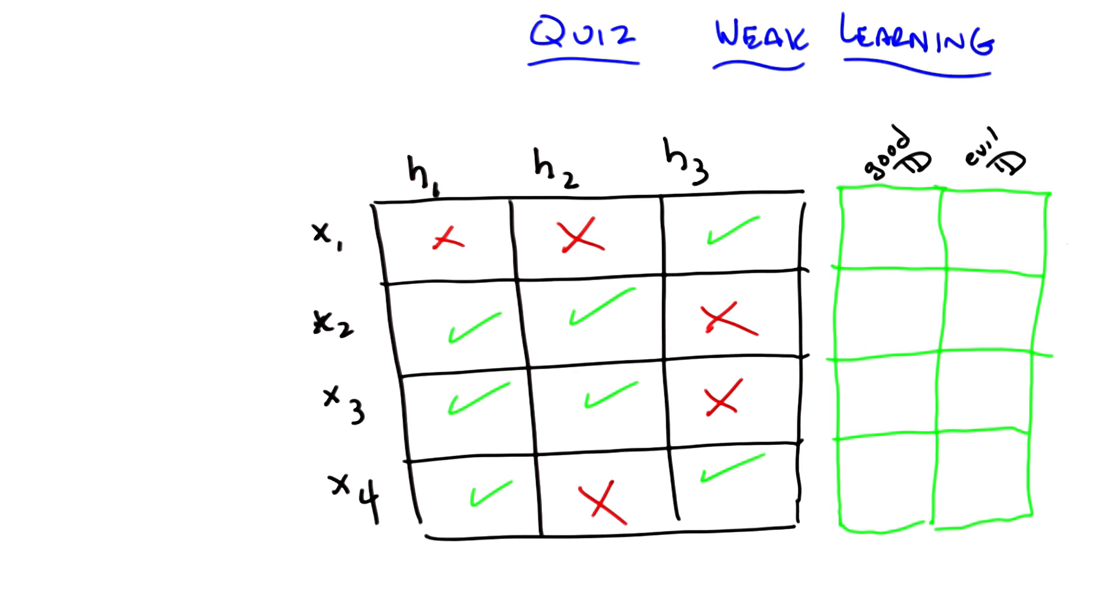Right. So does that mean that we don't have a weak learner because then there's some distributions for which any given hypothesis is going to get things wrong? Maybe, maybe not. Let's see.